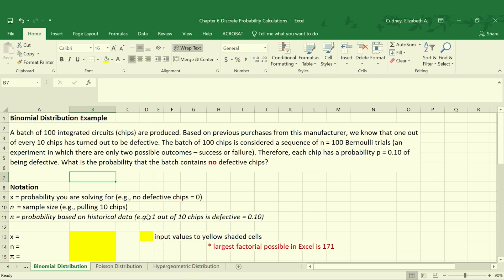So in this example we have a batch of 100 integrated circuits or chips that are being produced. We have previous information based on purchases from the manufacturer, so we know that one out of every ten chips has turned out to be defective. So one of the key words here is defective, so we know it's a binomial distribution because it's either good or it's bad. There's no in between. We have a batch now of a hundred chips, and that would be considered a sequence of n equals 100 Bernoulli trials. So we have a hundred chips in this batch, so our n is 100. It's a small n for our sample size, and a Bernoulli trial means again that there's only two possible outcomes: success or failure. In this case good or defective.